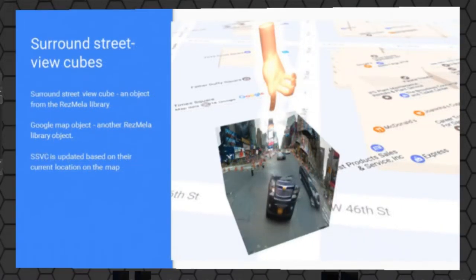You can pick from a set of objects in the library and place it anywhere on the board. We have another object called a Google Street Map object — it's not a cube object, it's different. It allows you to place a Google Map on the board, and that map gets magnified and placed on the region, which is where the whole exercise takes place.